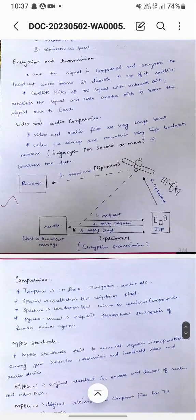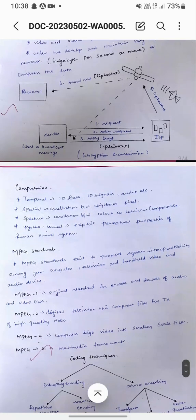Compression has some features: temporal, spatial, spectral, and physio-visual. Temporal handles taint data and 1D signals such as audio. Spatial refers to correlations between neighboring pixels. Spectral refers to correlations between color or luminance components. Physio-visual exploits the peripheral properties of the human visual system.